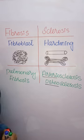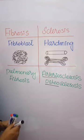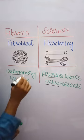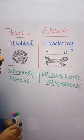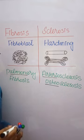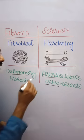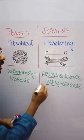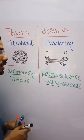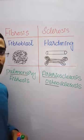An example of fibrosis is pulmonary fibrosis, which means fibrosis in the lungs. Examples of sclerosis include arteriosclerosis, meaning hardening in the artery, and osteosclerosis, meaning hardening in the bone.